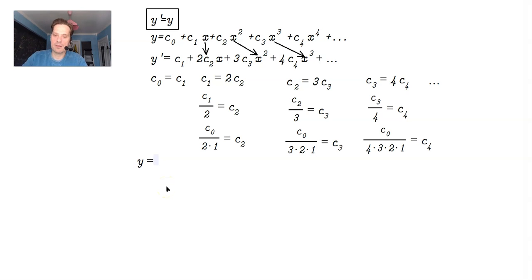y is equal to c sub 0 because that's equal to c sub 0. Now c sub 1 is also plus c sub 0 times x to the first plus. So this normally would be c sub 1, right? But we know c sub 1 and c sub 0 are equals. That's why you put that here.